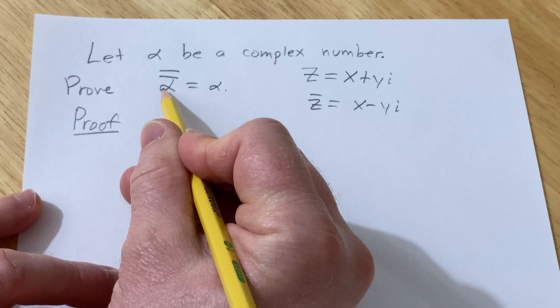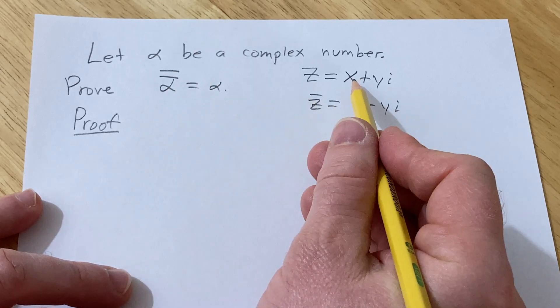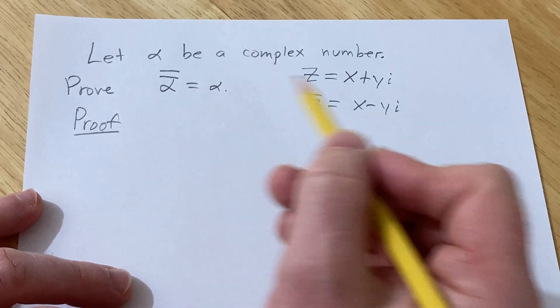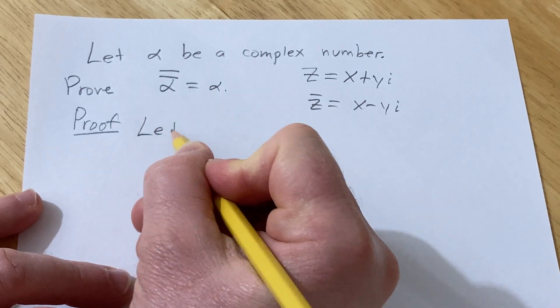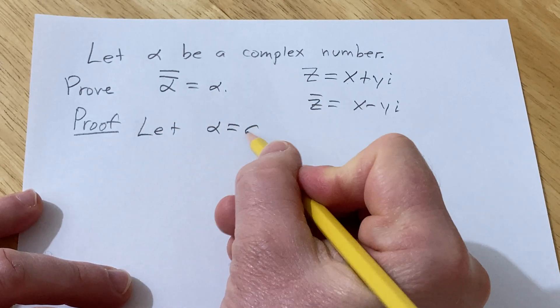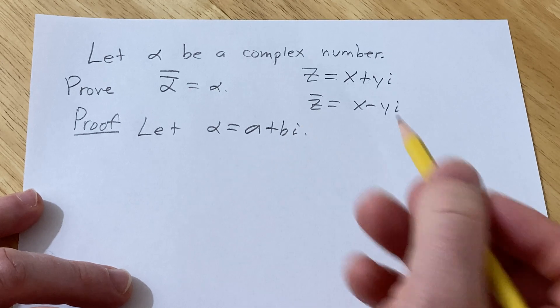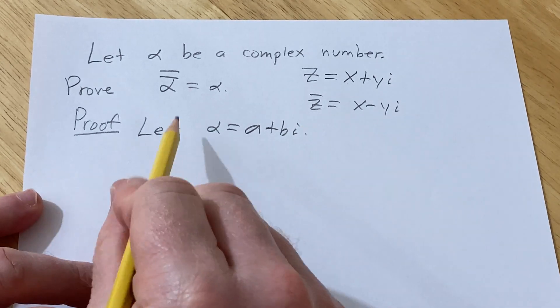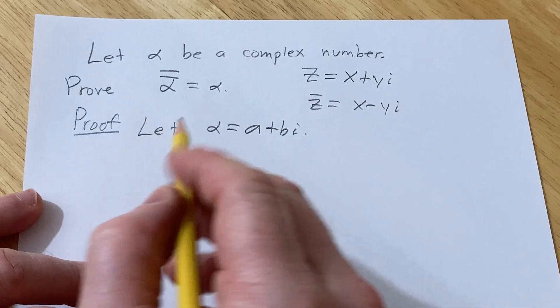So here we need to write alpha as a complex number with the real part and an imaginary part. So a good first step is to let alpha be equal to a plus bi. Right here a and b are real numbers. All right so let's look at the conjugate.